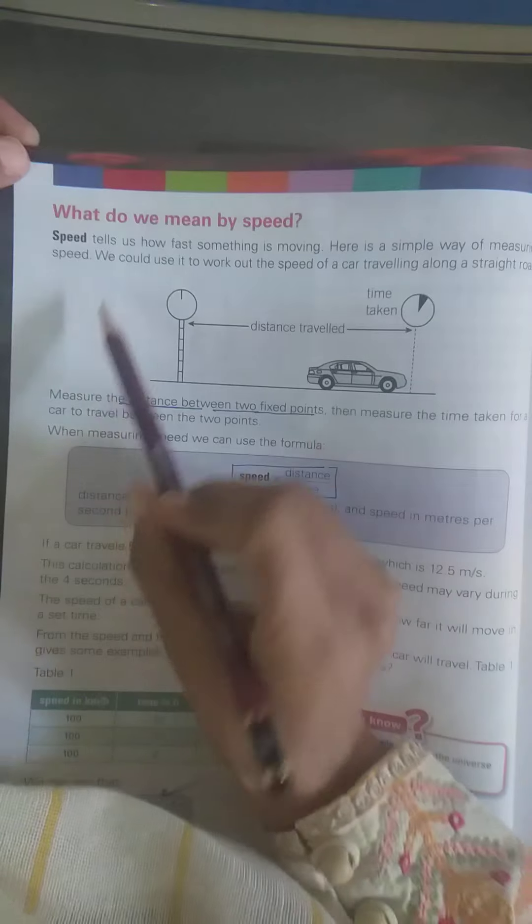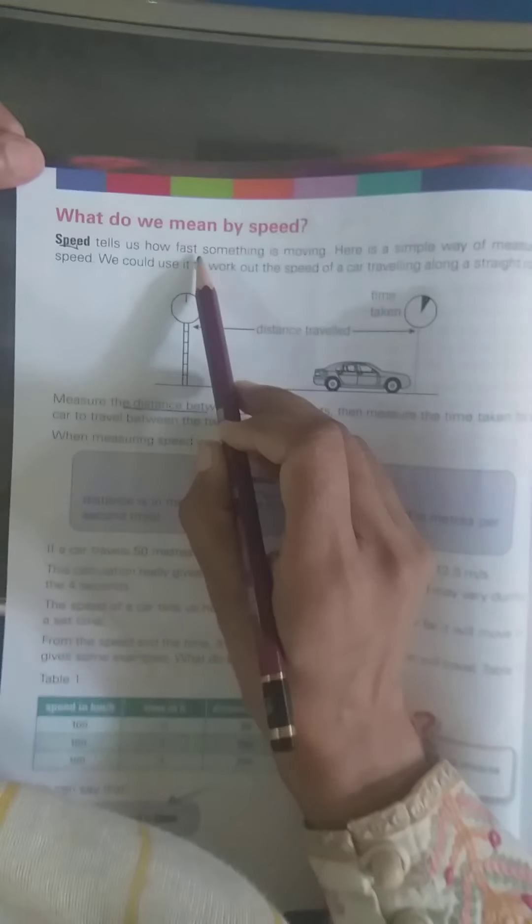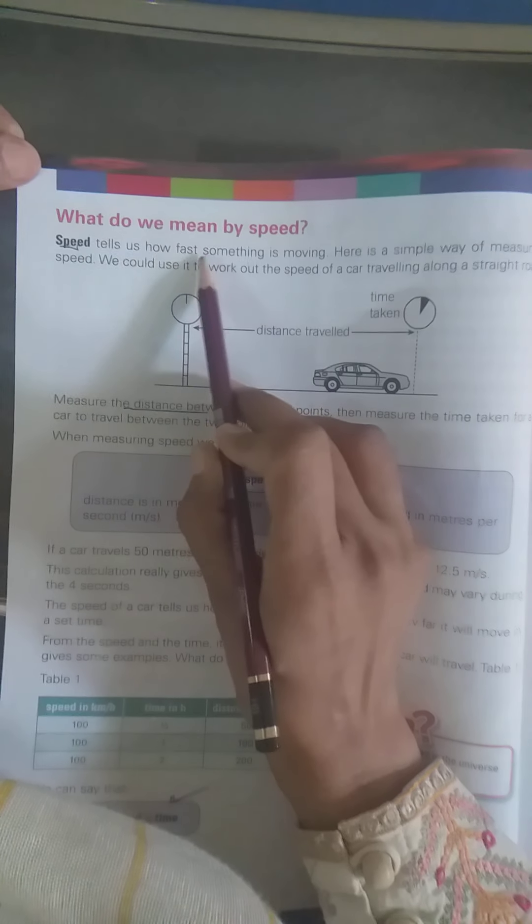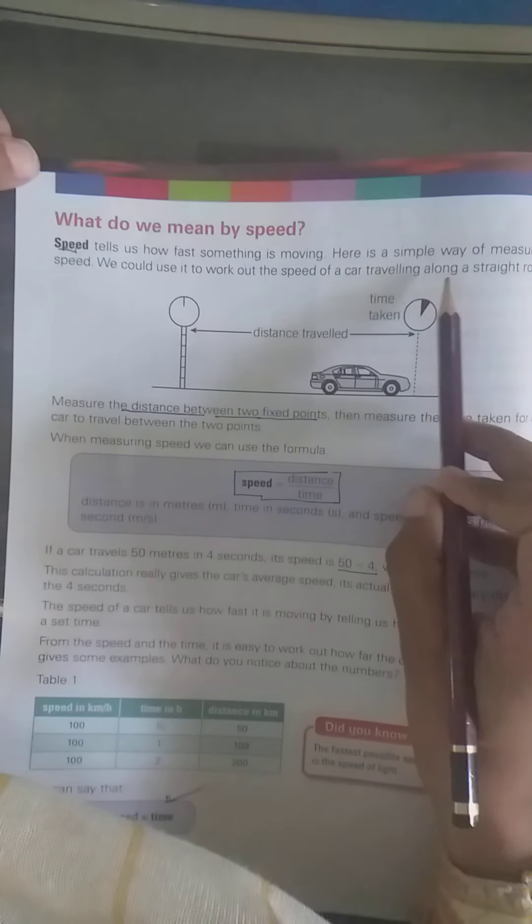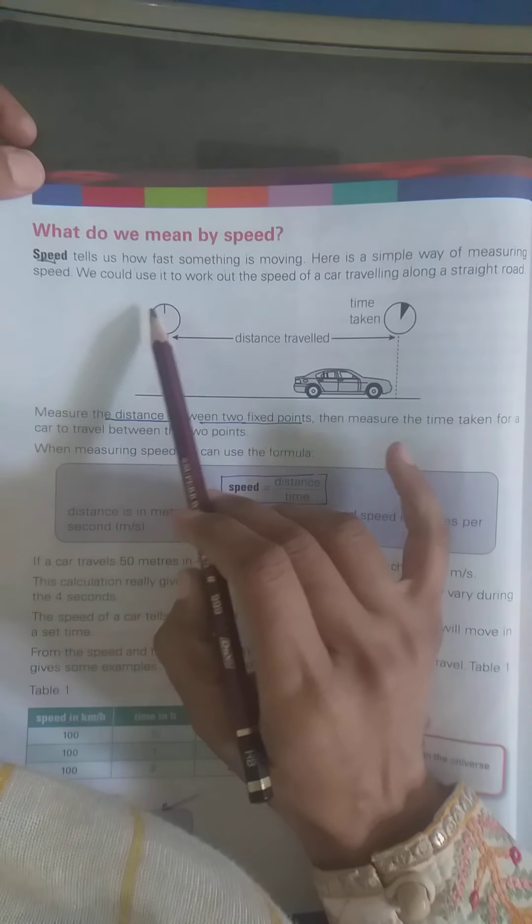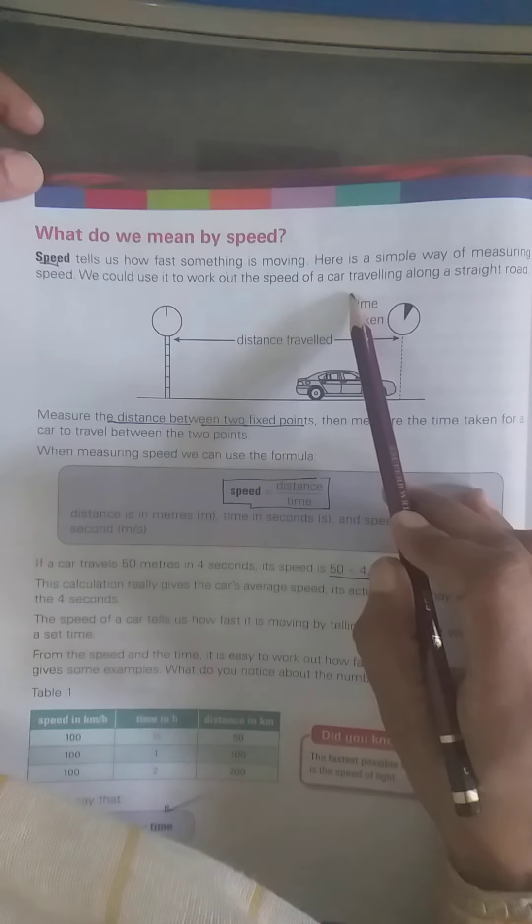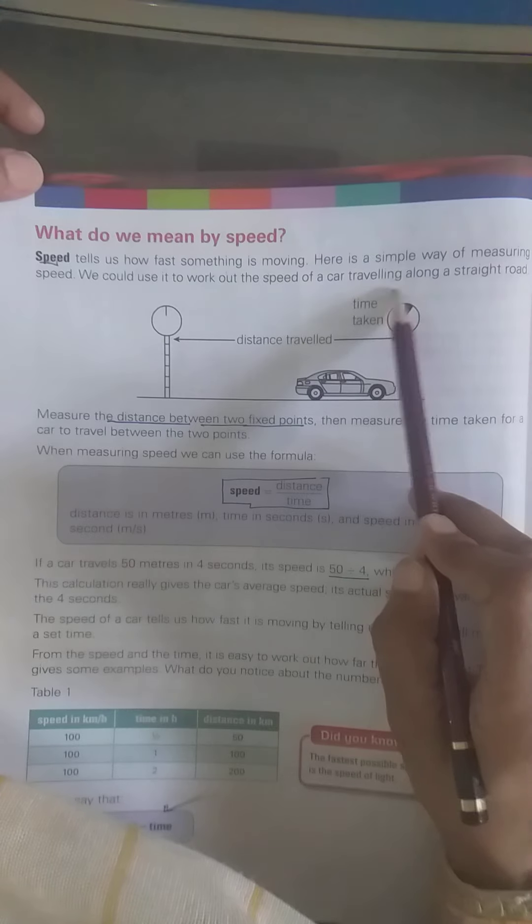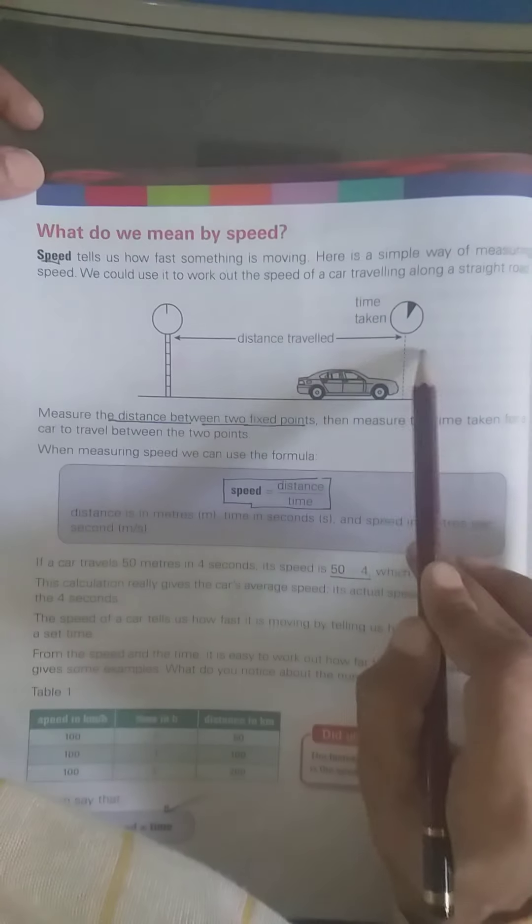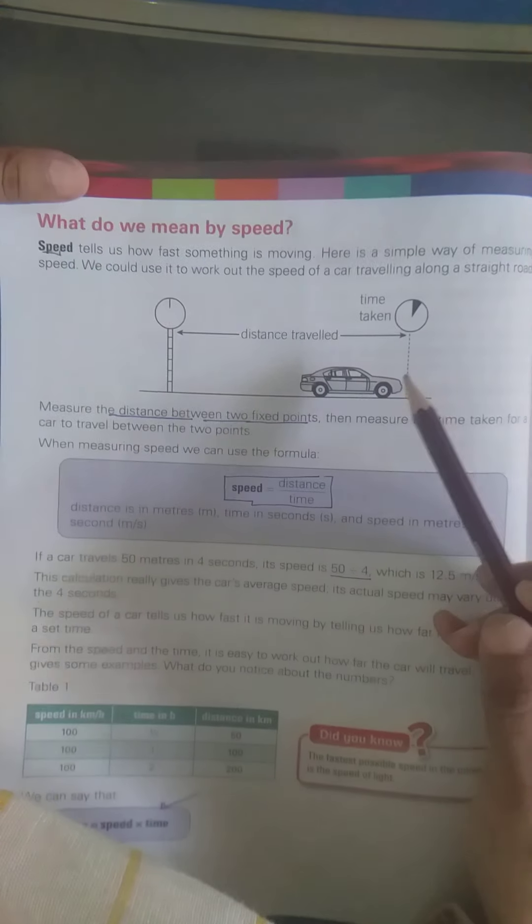So first of all what do you know about speed? Speed kya hothi hai? Speed hume batati hai ke koi bhi chiz kitana fast move kar rahi hai. To ye hemare paas simple way hai ke hem measure kar saken speed ko. Yarni ke joh bhi hem work out karthay hai. Yarni ke speed joh jaysse ke kar ki ho gai, kar joh ke ek straight road pe traveling kar rahi hai.